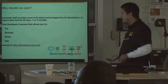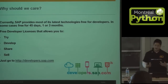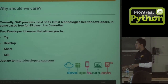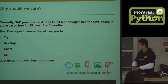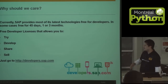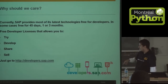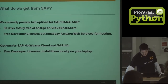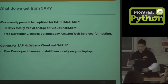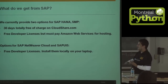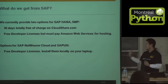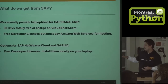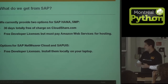So why should we care about this? Because SAP now provides most of the latest technologies for free — in some cases completely free, others for 45 days or one to three months. We have free developer licenses: you can try, develop, share, and sell. You just need to go to developers.sap.com. We have two options: 30 days totally free of charge on CloudShare.com, or free developer licenses where you just pay Amazon Web Services for hosting. And for Netweaver Cloud and SAP UI5, it's completely free — you can use it on your laptop.